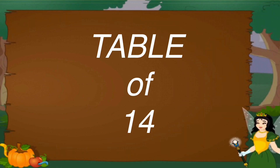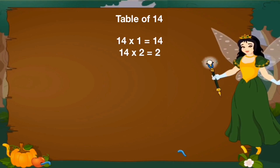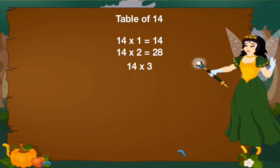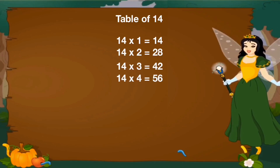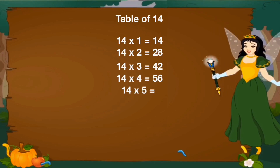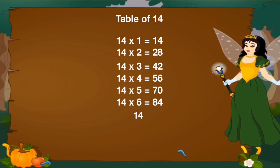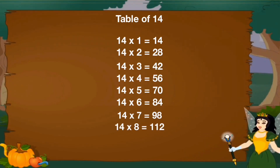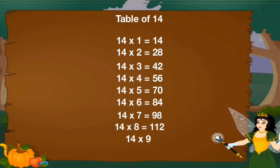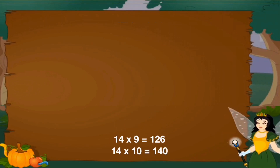Let's revise table of 14. 14 1's are 14, 14 2's are 28, 14 3's are 42, 14 4's are 56, 14 5's are 70, 14 6's are 84, 14 7's are 98, 14 8's are 112, 14 9's are 126, 14 10's are 140.